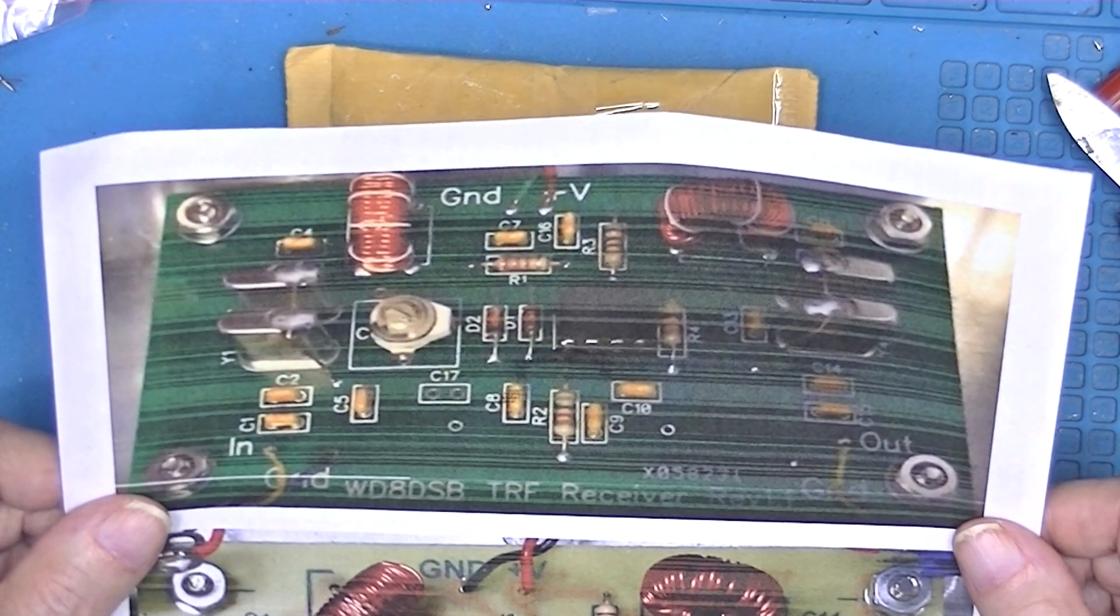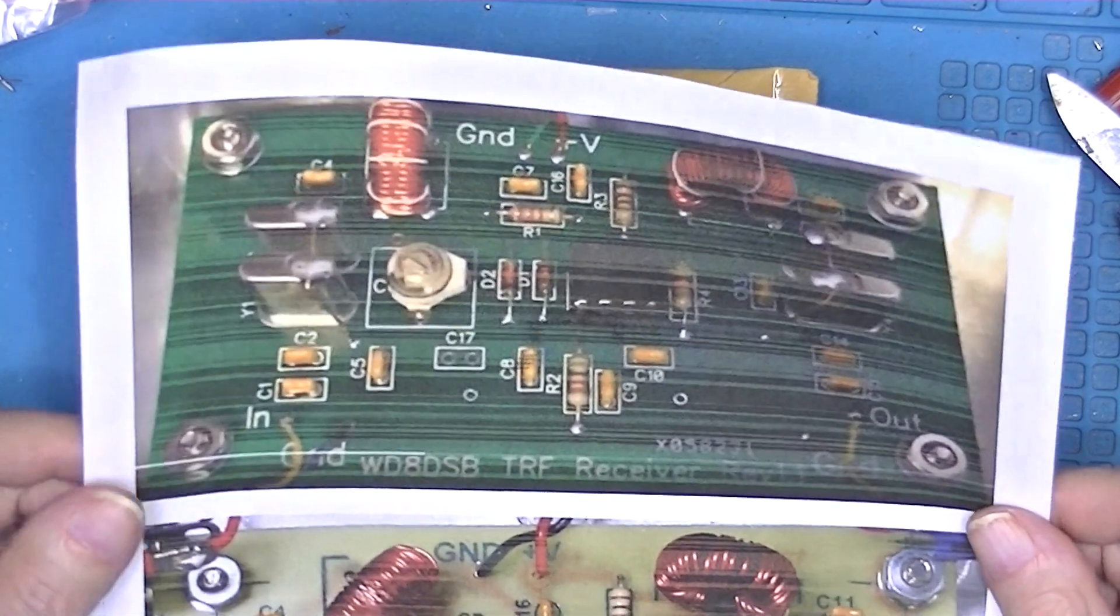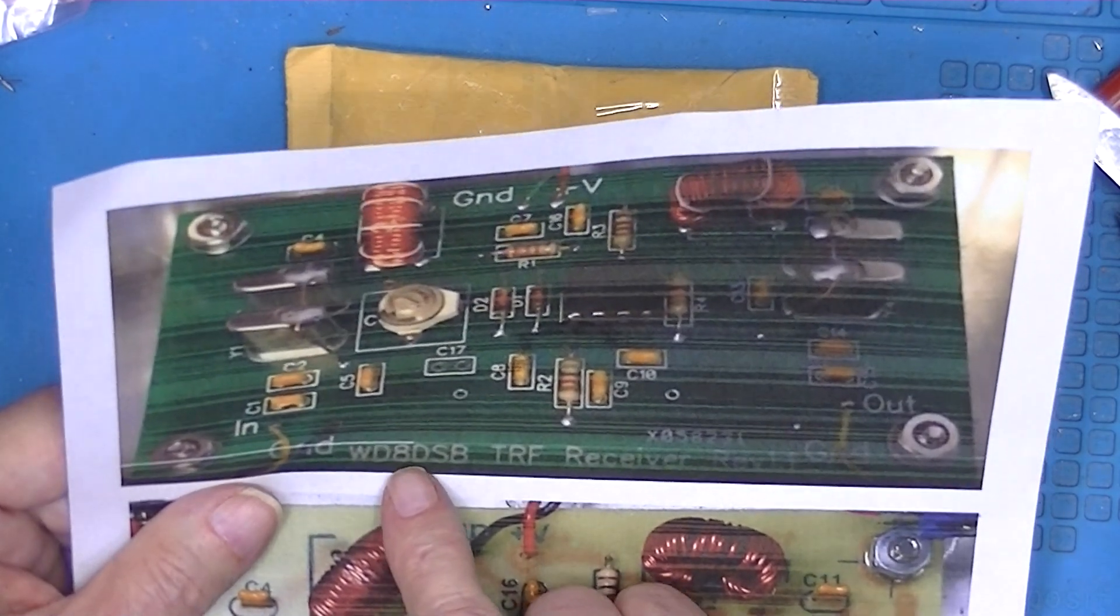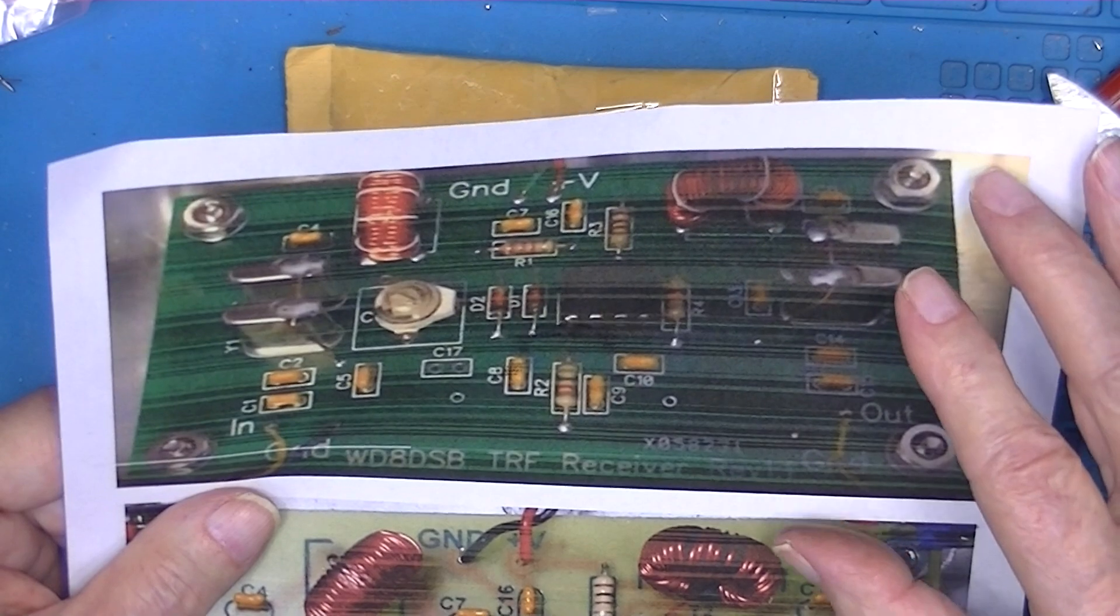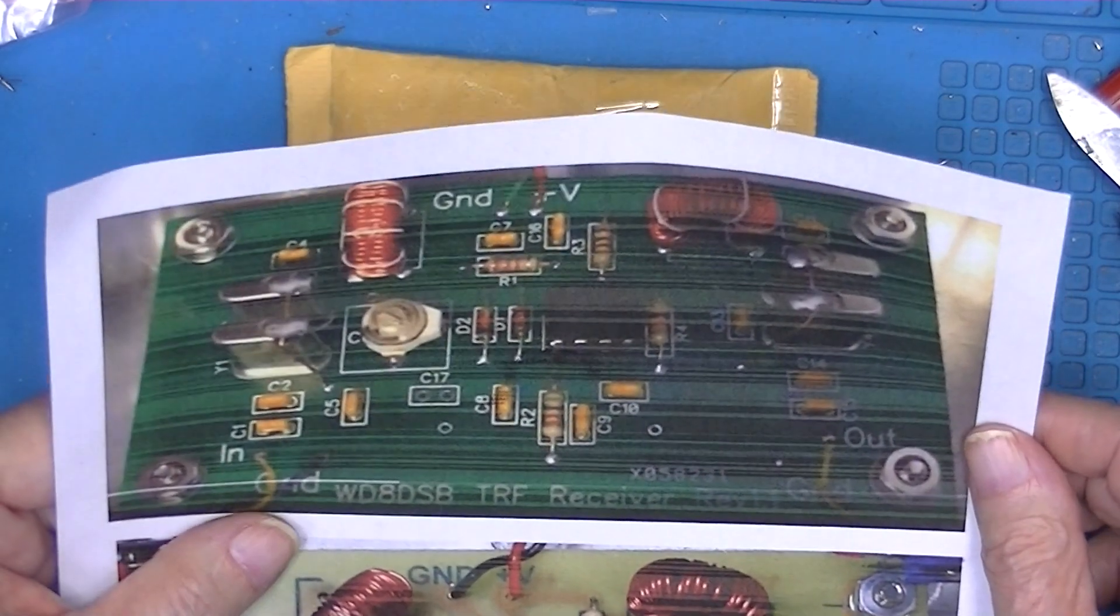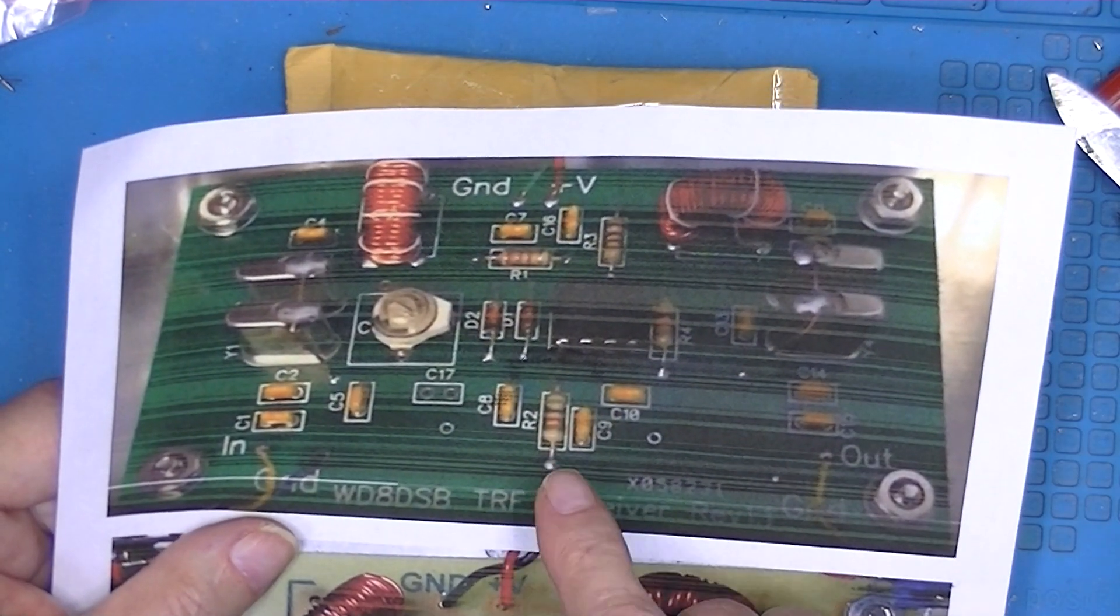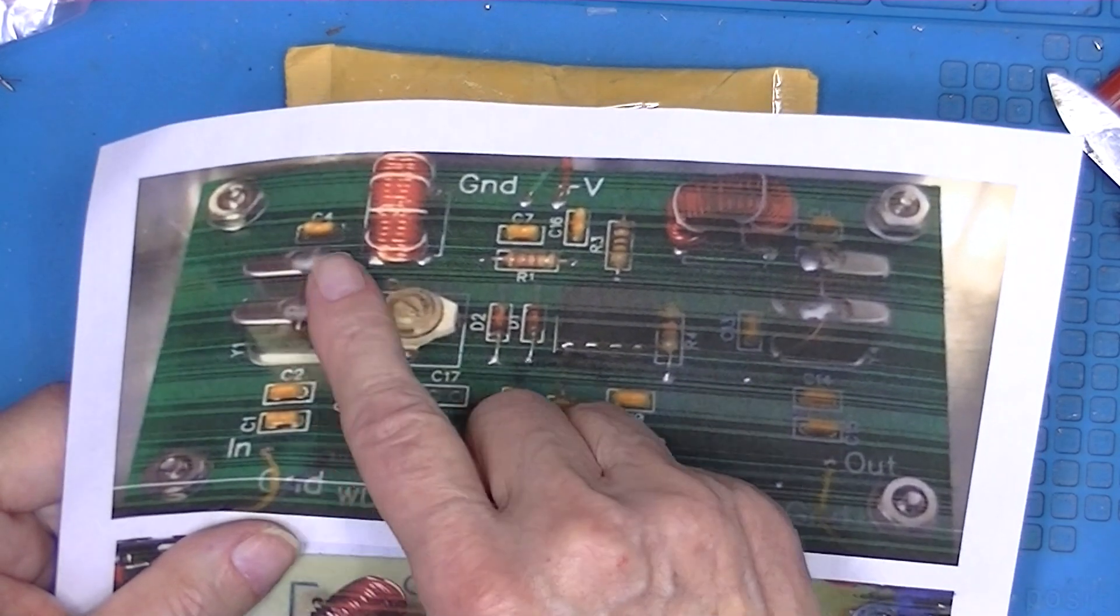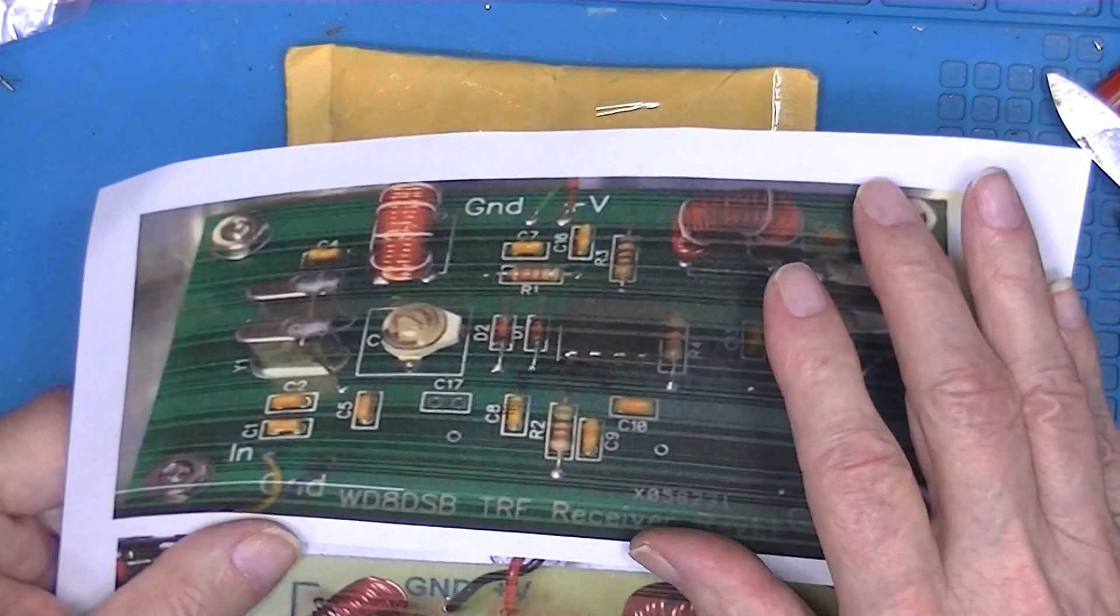I remember a QST article that had a description of such a receiver. Looking around, it's WD8DSB. This is a photograph by this gentleman of a receiver board. Apparently he made or had printed his own circuit boards. He does not sell them.